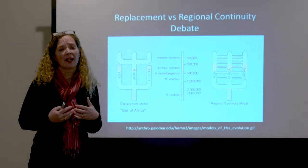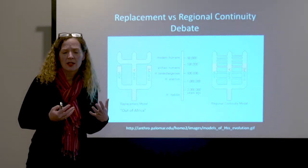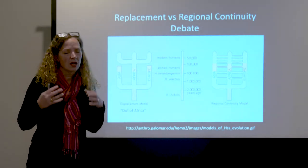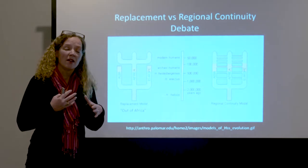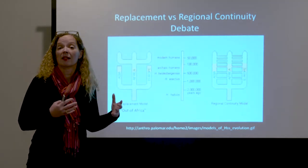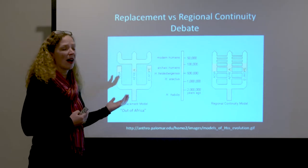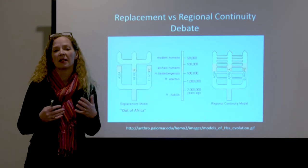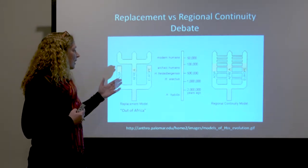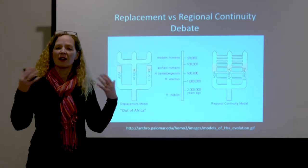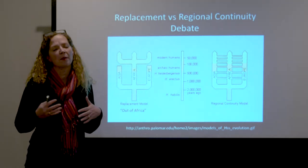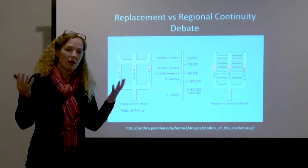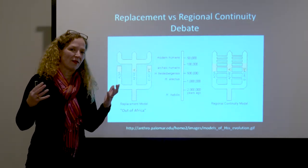They based the regional continuity model on the fact that certain cranial characteristics — for example, the shape of the skull and the shape of the teeth in Asian Homo erectus — were very similar to characteristics seen in Asian populations today, and similarly for African and European populations. Up until the mid-1980s, the replacement model held that Homo sapiens evolved in Africa and then emerged out as a second out-of-Africa migration.